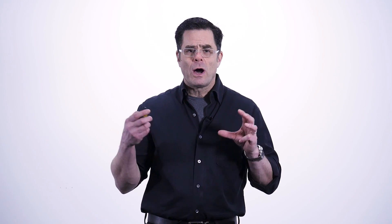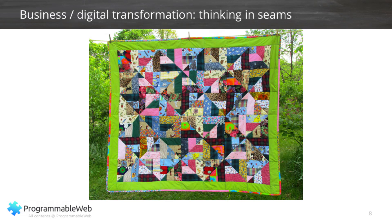This part of the series is all about how APIs can drive organizational culture. Most organizations today have an infrastructure that looks like a highly intertwined patchwork quilt of things where you don't know where one part starts and the other ends.